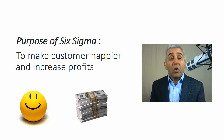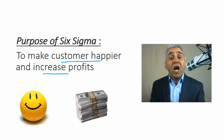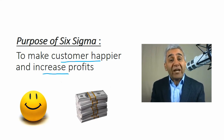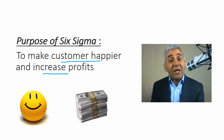Six Sigma has two objectives. One is to make the customer happier, and second is to increase profits. At first, these two purposes might look contradictory — you might think that making the customer happy would require spending money, reducing profits. But the approach here is that Six Sigma makes customers happy and increases profits by reducing waste, making processes efficient, and reducing defects. The customer gets a quality product, and the company increases profits because it doesn't need to deal with rework, rejection, customer dissatisfaction, warranties, claims, and other things.